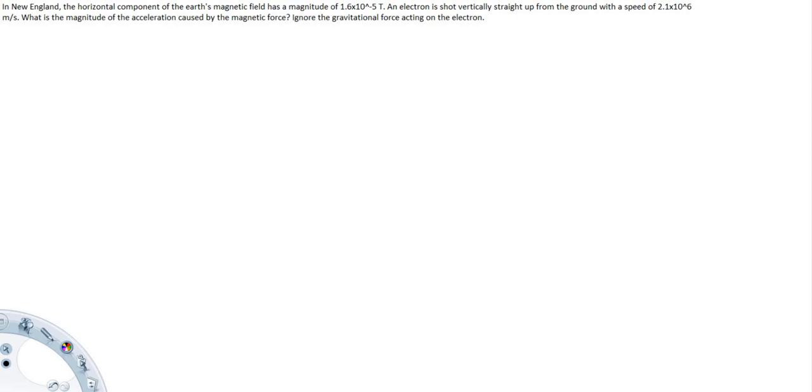In New England, the horizontal component of the Earth's magnetic field has a magnitude of 1.6 times 10 to the negative 5th Tesla. An electron is shot vertically straight up from the ground with a speed of 2.1 times 10 to the sixth meters per second. What is the magnitude of acceleration caused by the magnetic force?